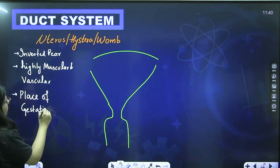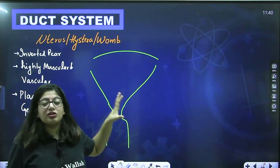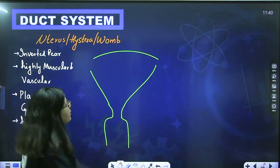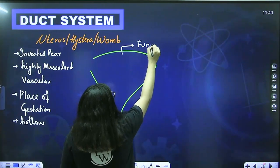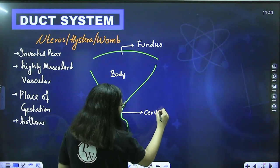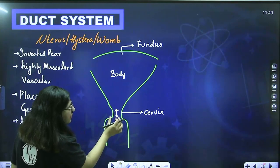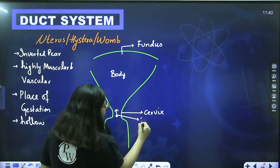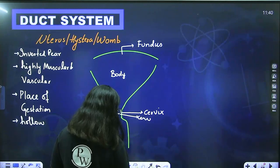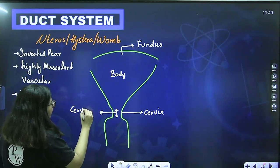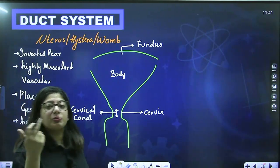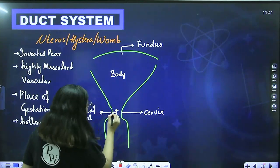The various parts of the uterus: the upper dome-shaped part is the fundus, the center portion is the body, and the lower part is the cervix, present as a cervical canal. The cervical canal has very powerful sphincter muscles — internal and external sphincters — which close and open the opening. These are the most powerful sphincters because they hold the baby (around 3 kg) against gravity.